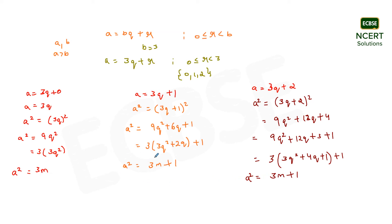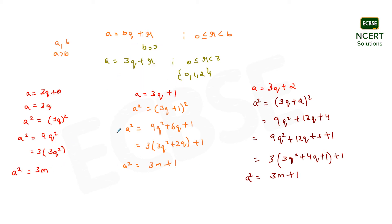Looking at all three cases, only two forms are possible for a². Either a² equals 3m, or a² equals 3m plus 1. These are the two possible forms when squaring any positive integer.